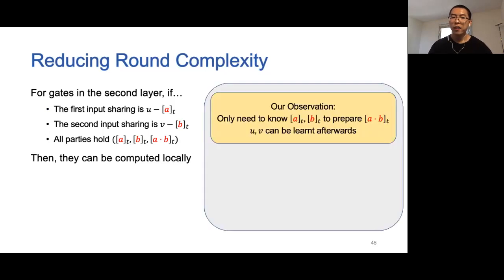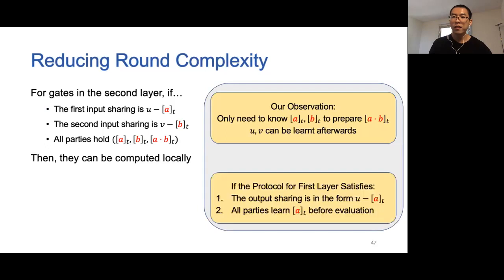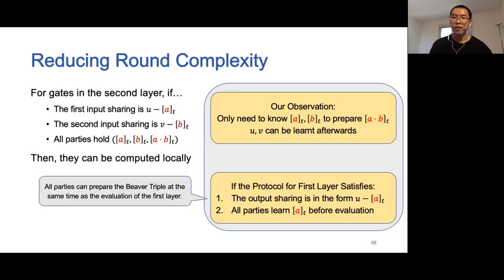For each multiplication gate in the second layer, if the first input sharing is in the form of u minus a, the second input sharing is in the form of v minus b, and all parties have the Beaver triple (a, b, a times b), then all parties can locally evaluate this multiplication gate. We observe that to prepare the Beaver triple, we only need to know the first two sharings a and b; the two public values u and v can be learned afterwards. Therefore, if the protocol for the first layer satisfies that the output sharing is in the form of u minus a — that is, a constant minus a sharing — and all parties learn the sharing a before evaluating this gate, then all parties can prepare the Beaver triple at the same time as evaluating the first layer.